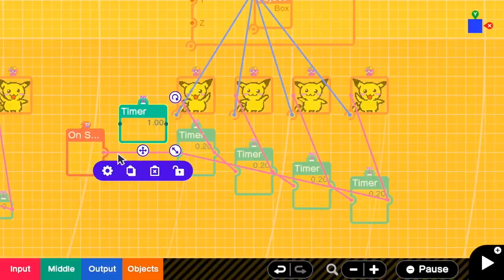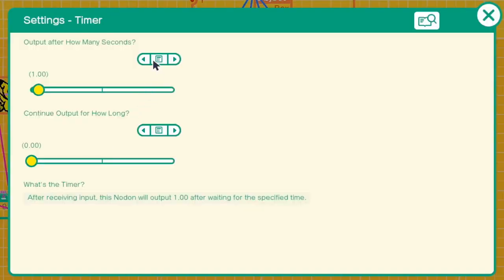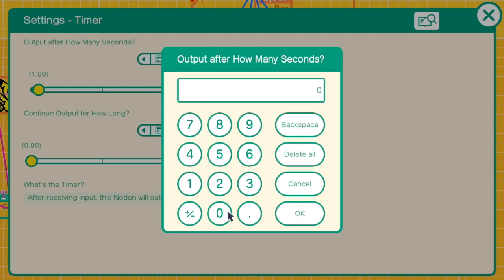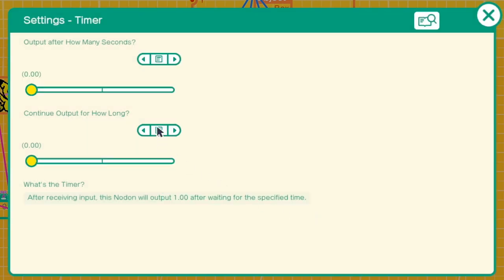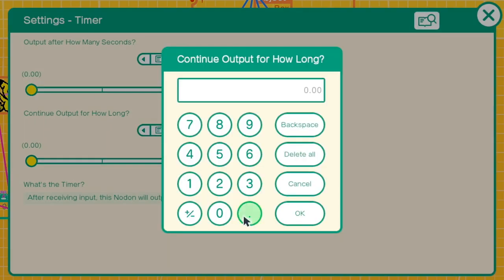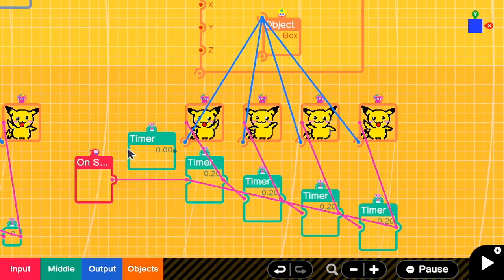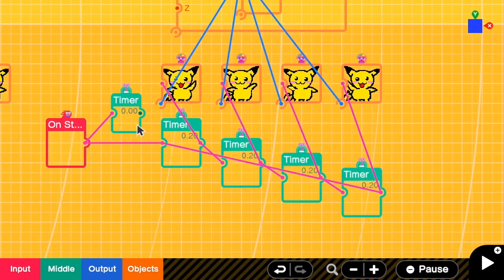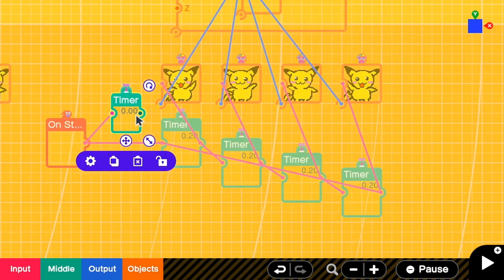And at this timer, we want to start directly after the on start signal. So we change this to be 0. And we need to continue for 0.2 seconds. Then we connect the on start output to the timer input.